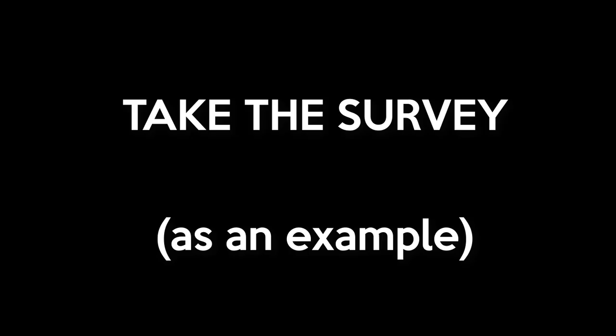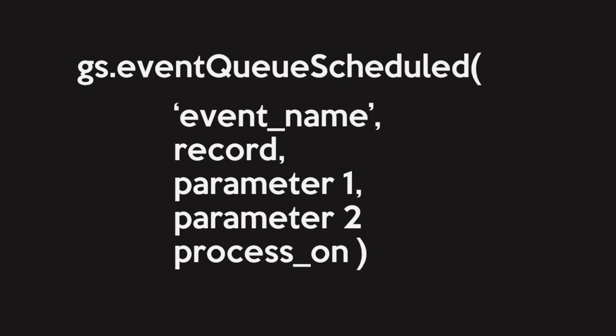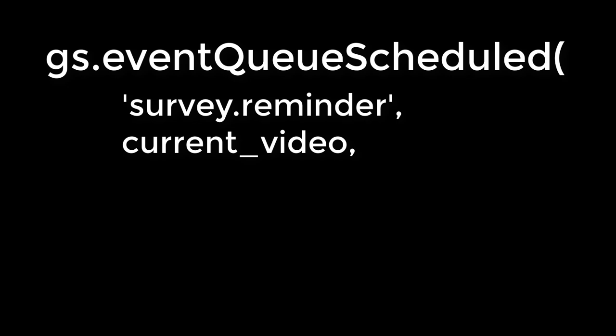Let's use my request as an example. We know the gs.eventqueue function takes the following arguments. gs.eventqueue scheduled looks like this. So how would I construct that function in order to remind you 10 minutes after you watch the video? Well, I'd first create an event called survey reminder, which is what I'd trigger. Then I'd refer to the record in question — this video.